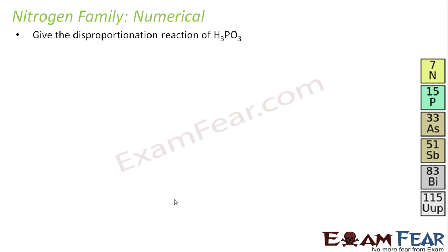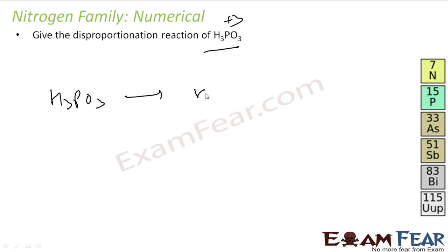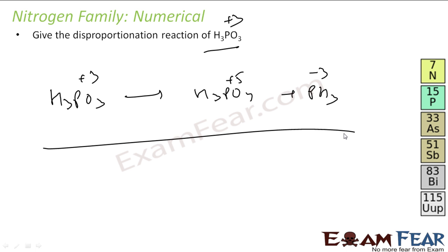The next question: give the disproportionation reaction of H3PO3. In H3PO3, phosphorus has an oxidation state of +3. It disproportionates into H3PO4 (oxidation state +5) and PH3 (oxidation state -3). So H3PO3 → H3PO4 + PH3.